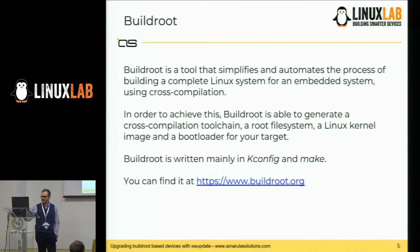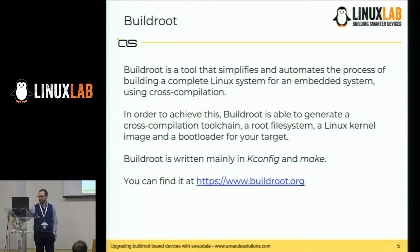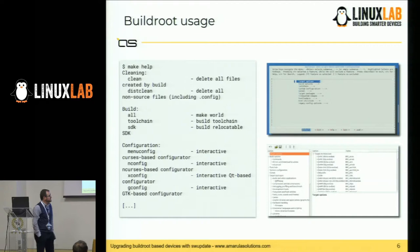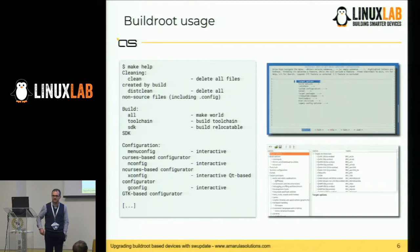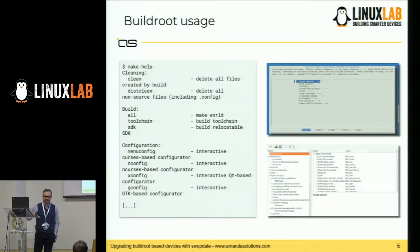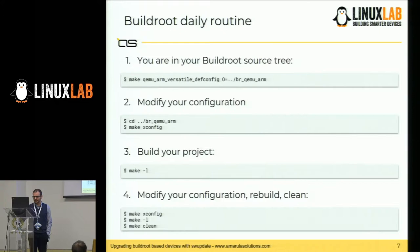Buildroot is written mainly in Kconfig and Make, so if you're accustomed to Kconfig and Make from the Linux kernel, U-Boot, or similar projects, you can work with Buildroot very easily. On the right you can find menuconfig and xconfig, two of the main interfaces you can use to customize your Buildroot configuration. On the left is an extract of the help file — you can do 'make help' on the command line to see all the things you can do with Buildroot.